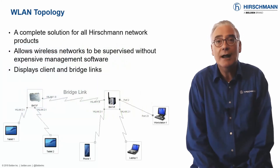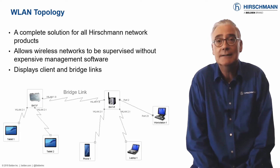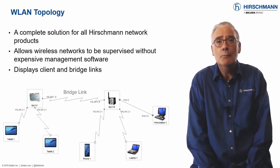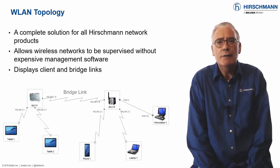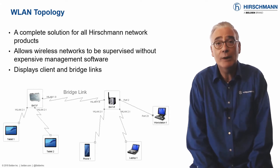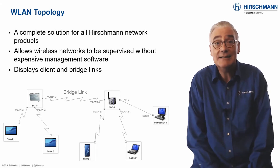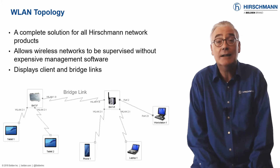Traditionally, Industrial HiVision has been used to display the topology of cabled links. But it also has the capability to show wireless connections. The auto-topology mechanism will discover and display both point-to-point links and connections between access points and clients.